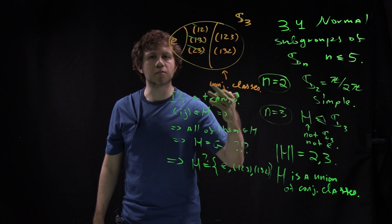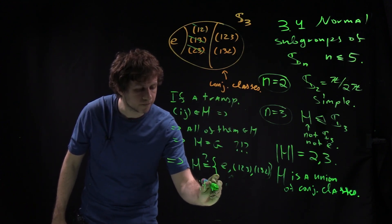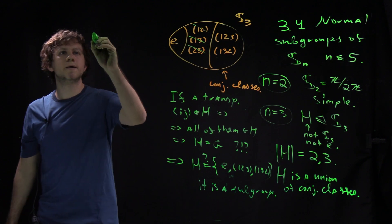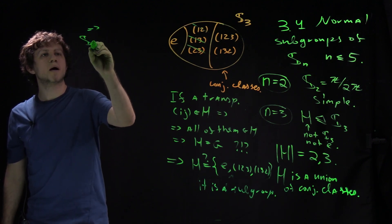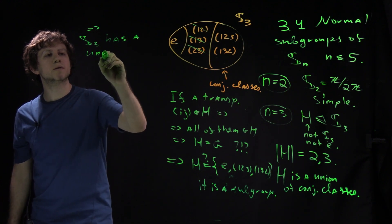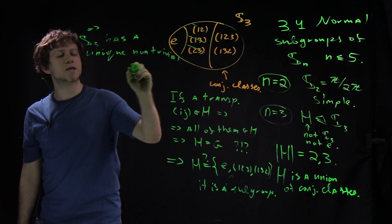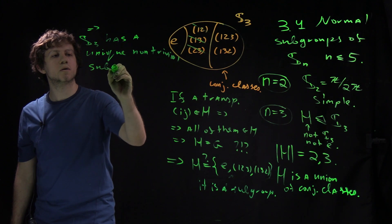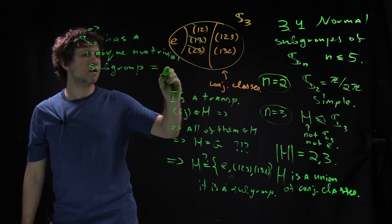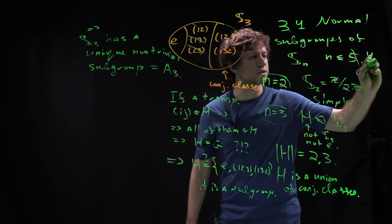We conclude that if H is non-trivial then H equals {e, (123), (132)}, and one checks that this is indeed a subgroup. So S3 has a unique non-trivial normal subgroup, namely A3.